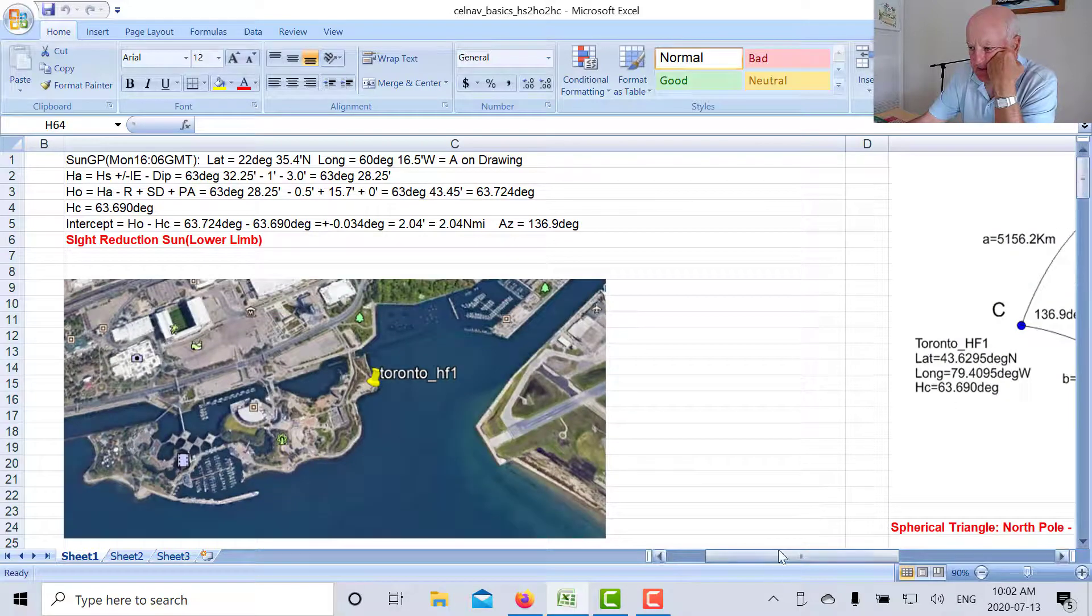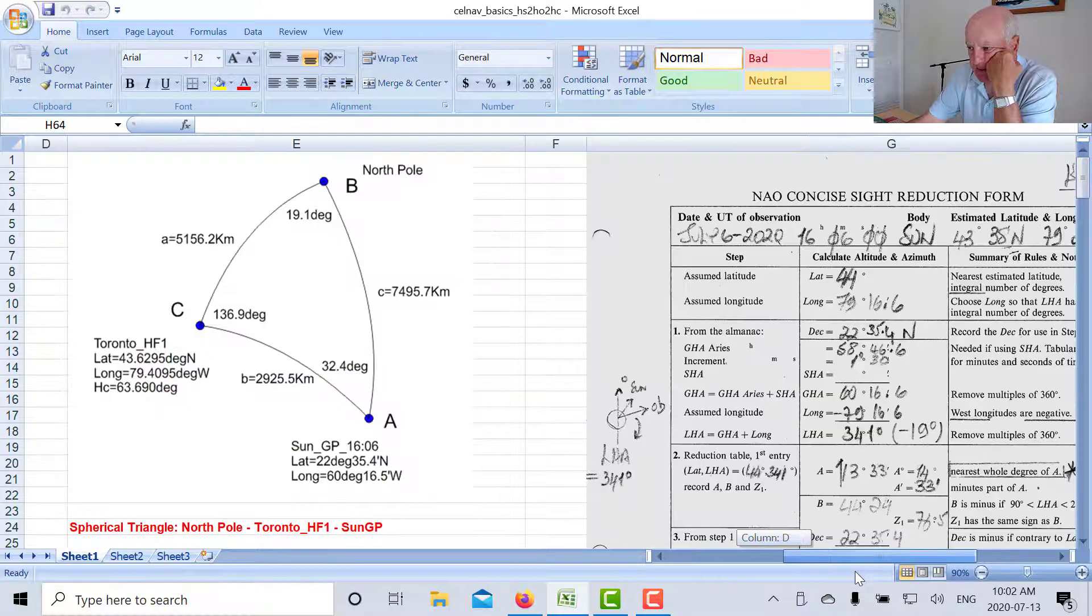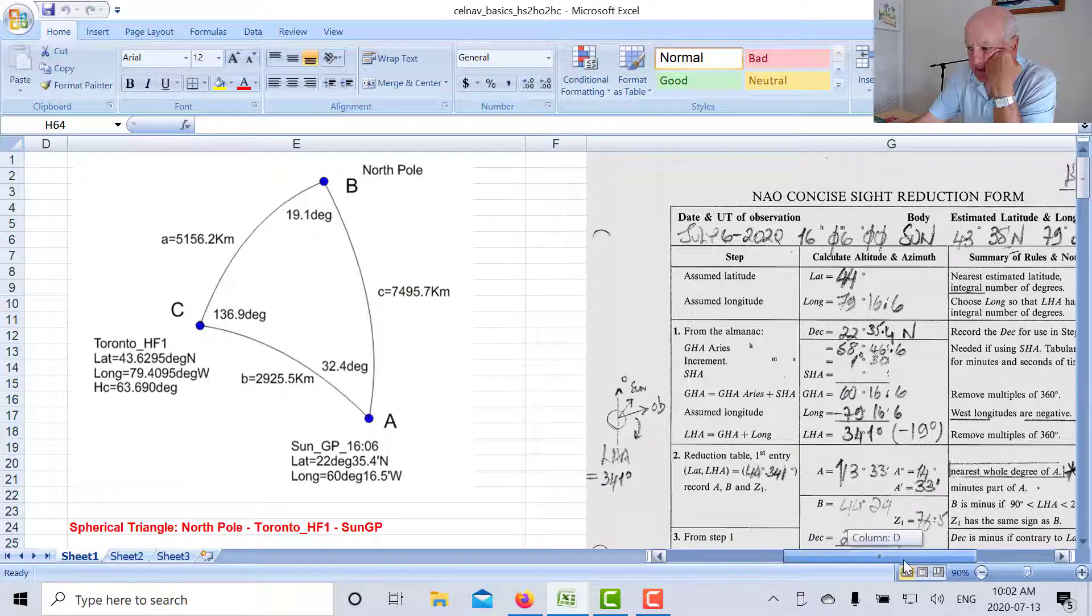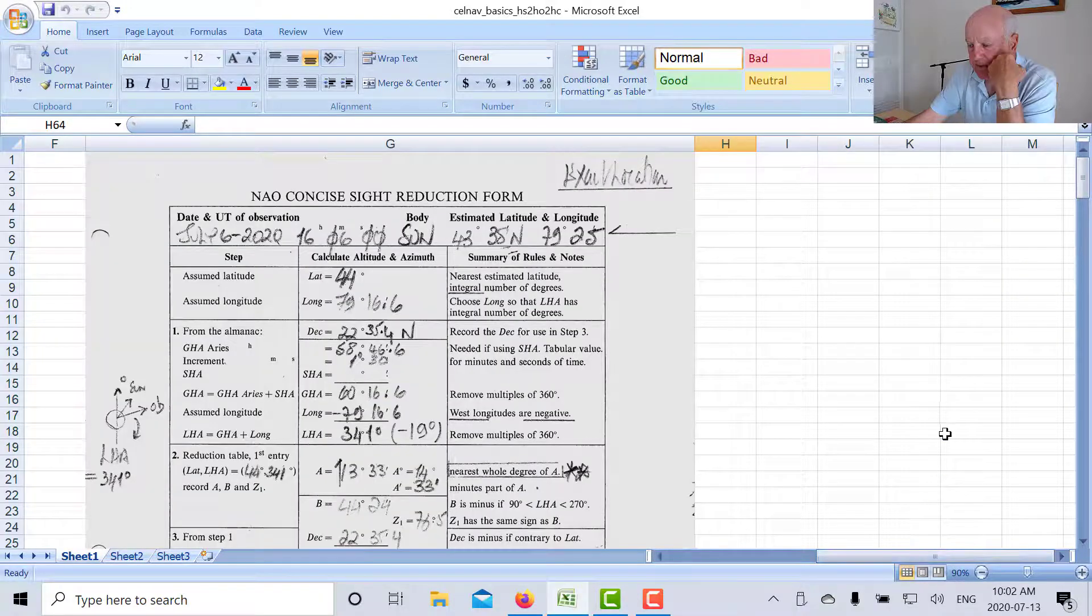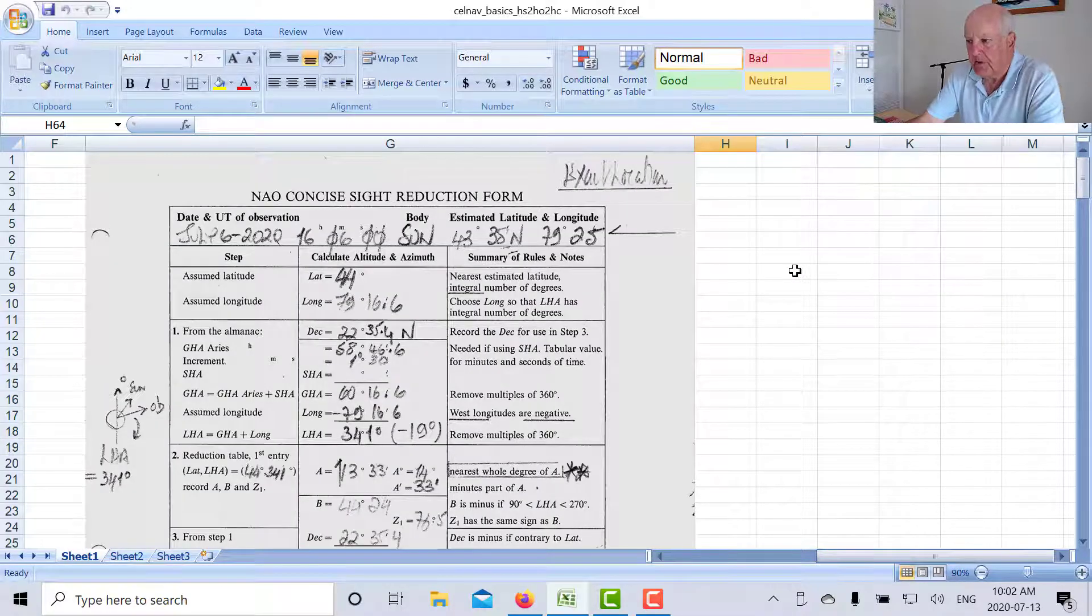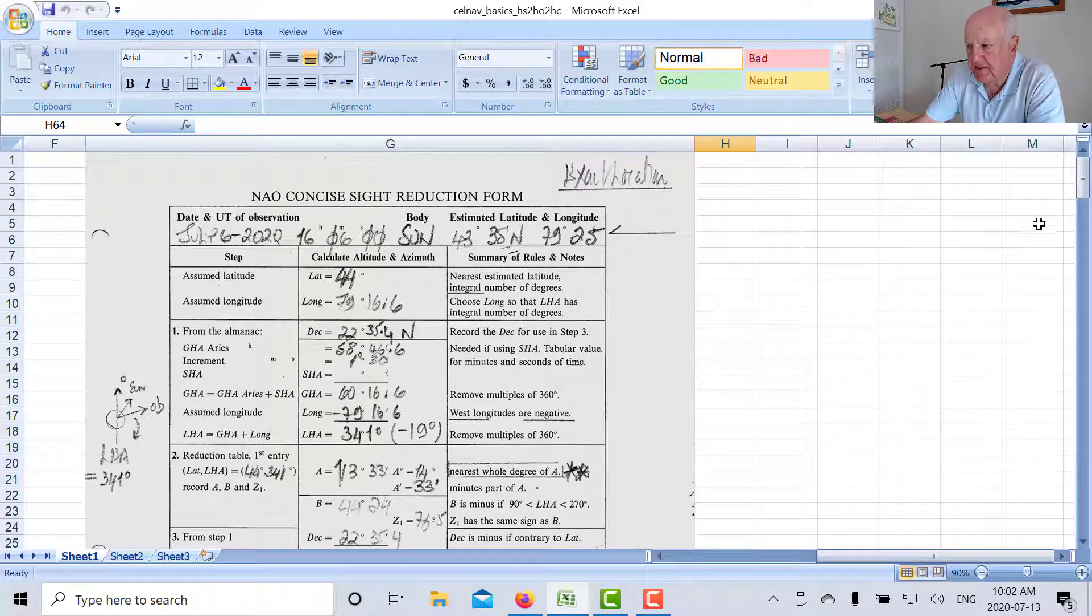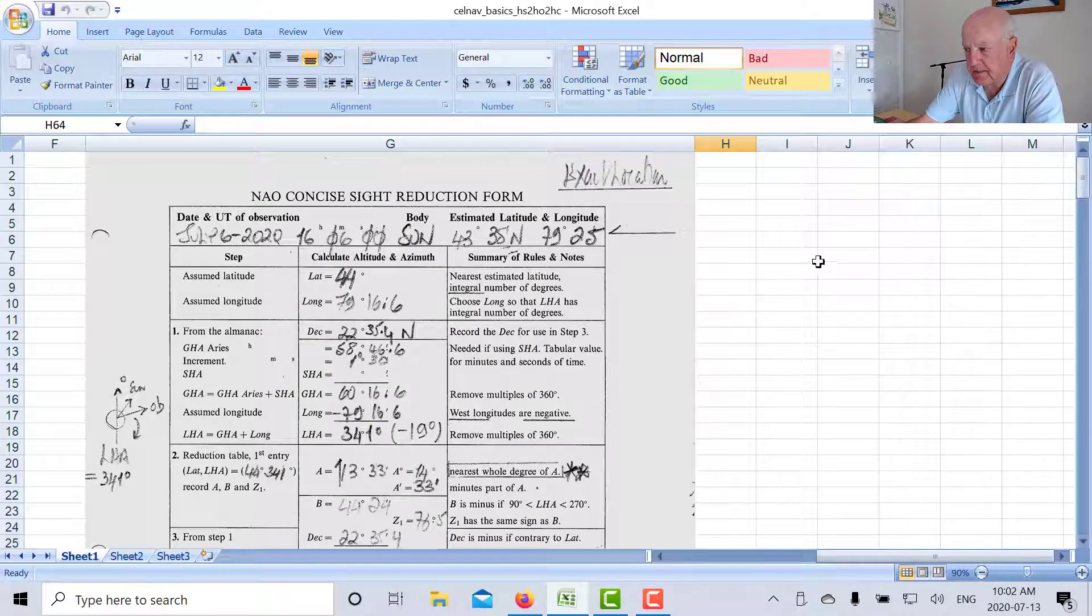And if you want to use the nautical almanac, what you have to do is, to make the tables precise and concise in the back of the book, they make a few simplifications in the nautical almanac. It's called the NAO concise sight reduction form. So there's our estimated latitude and longitude.